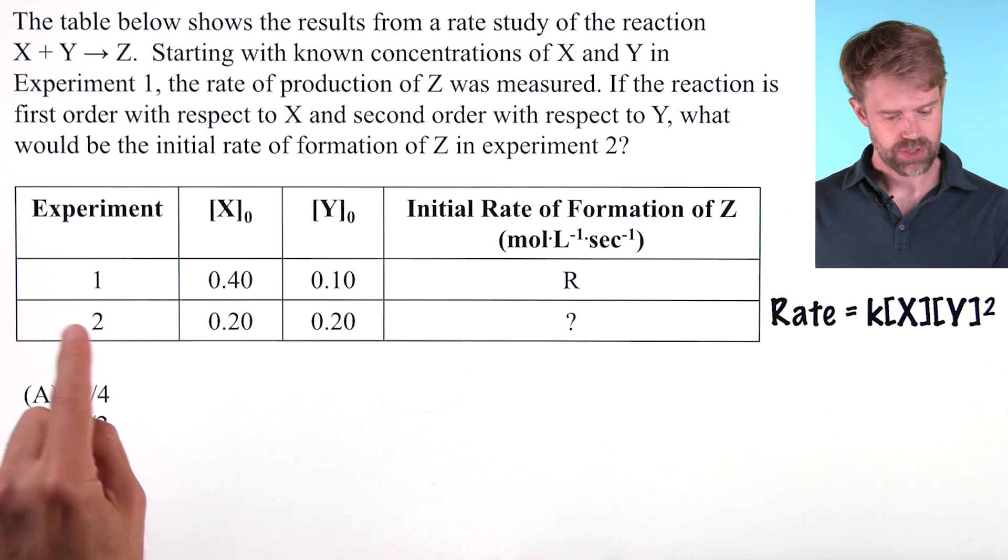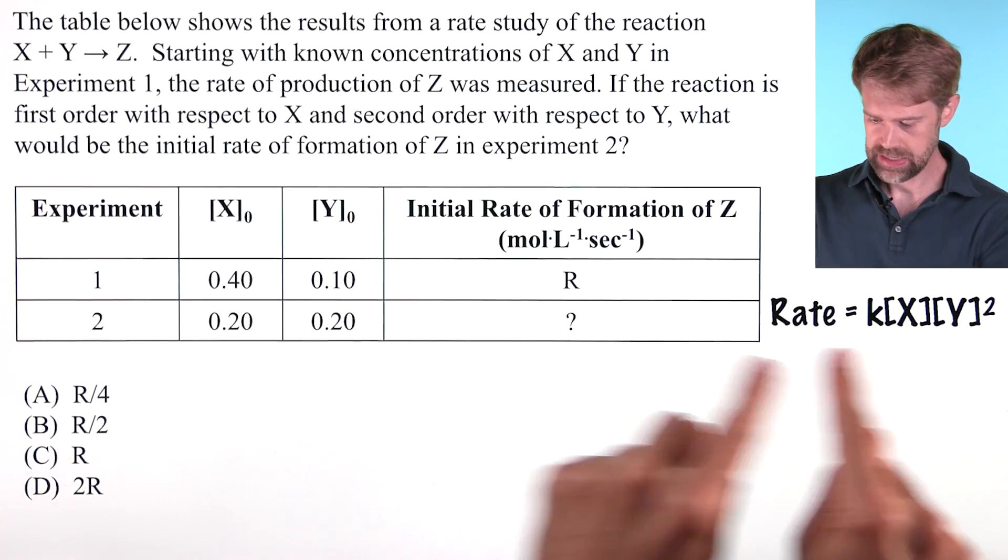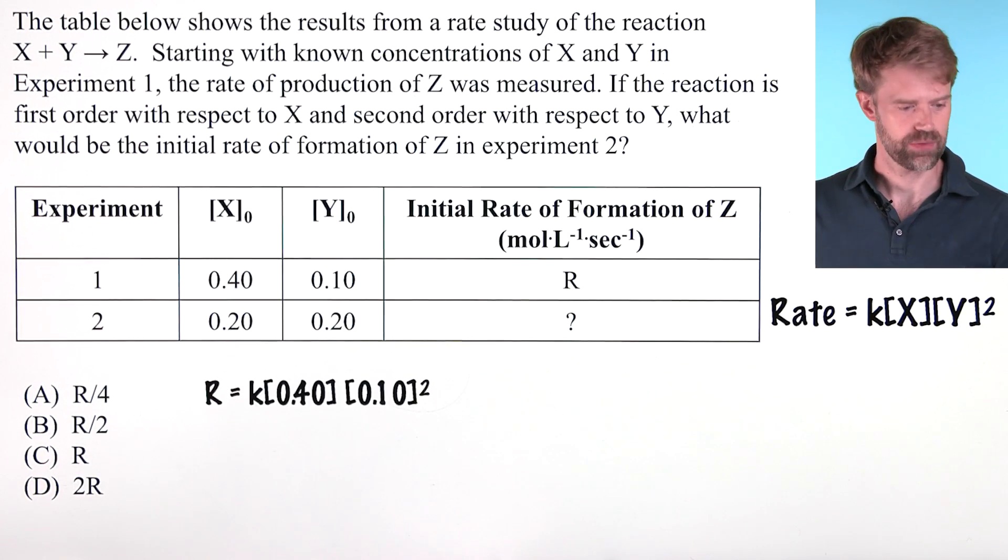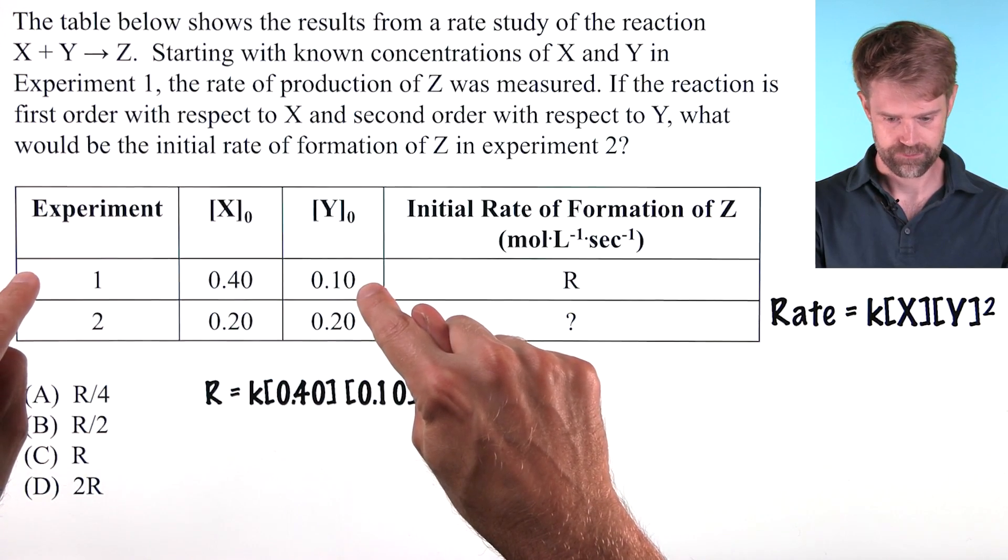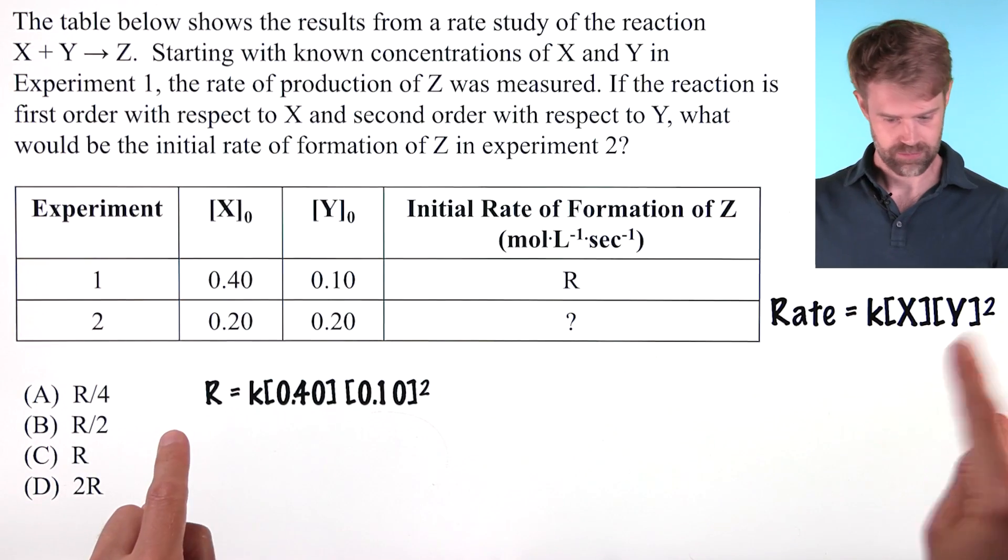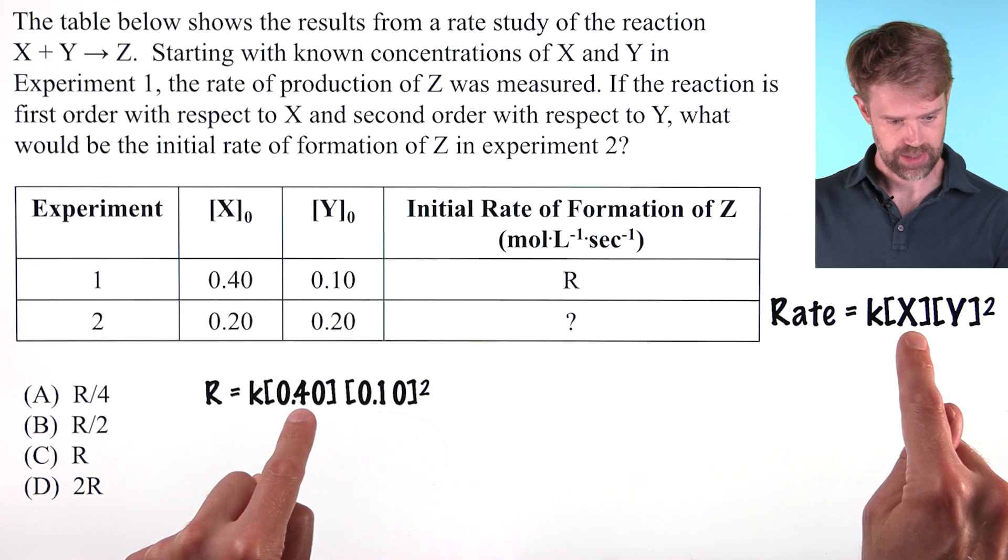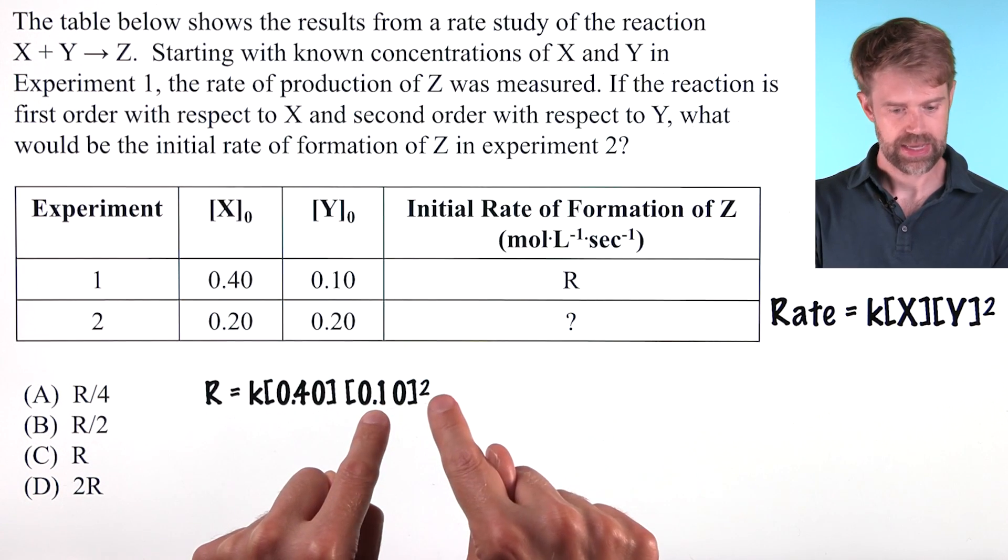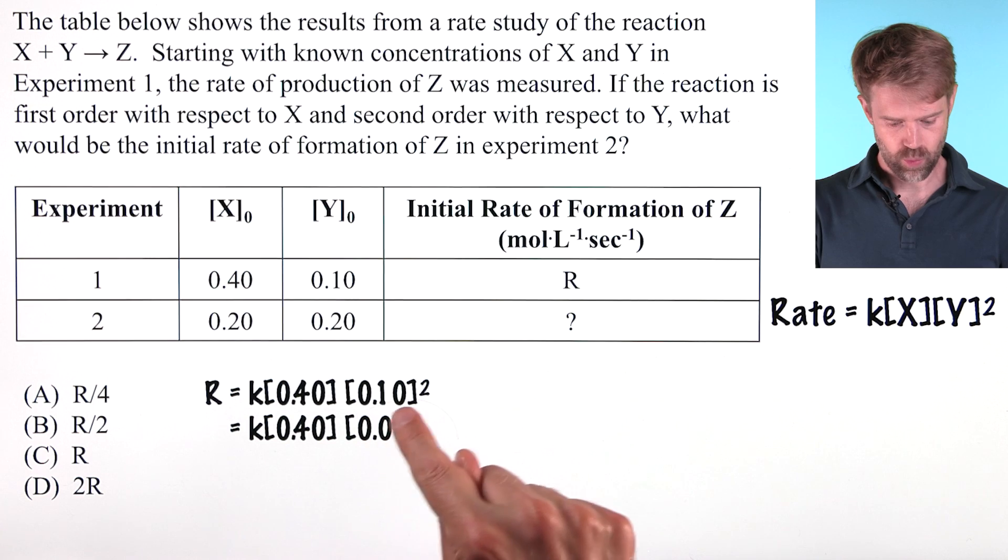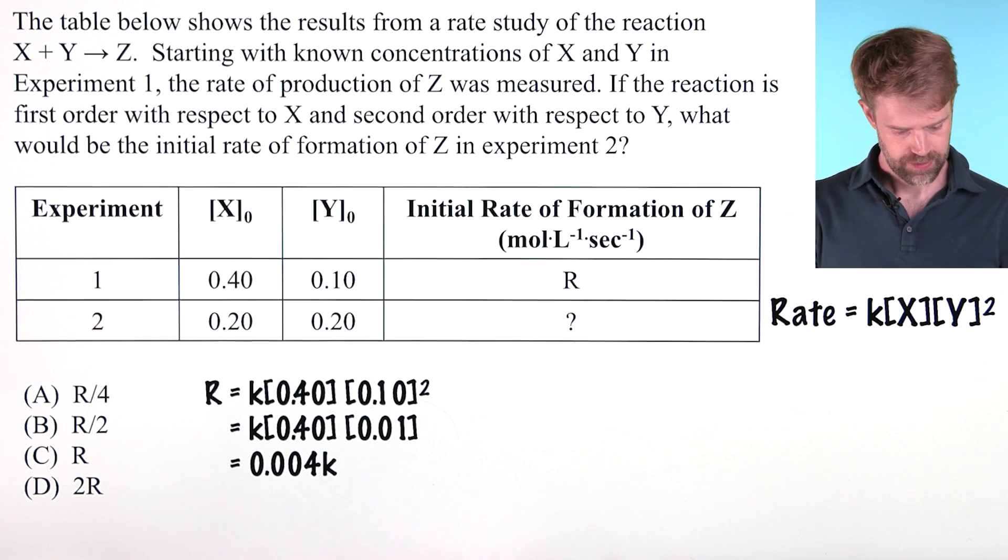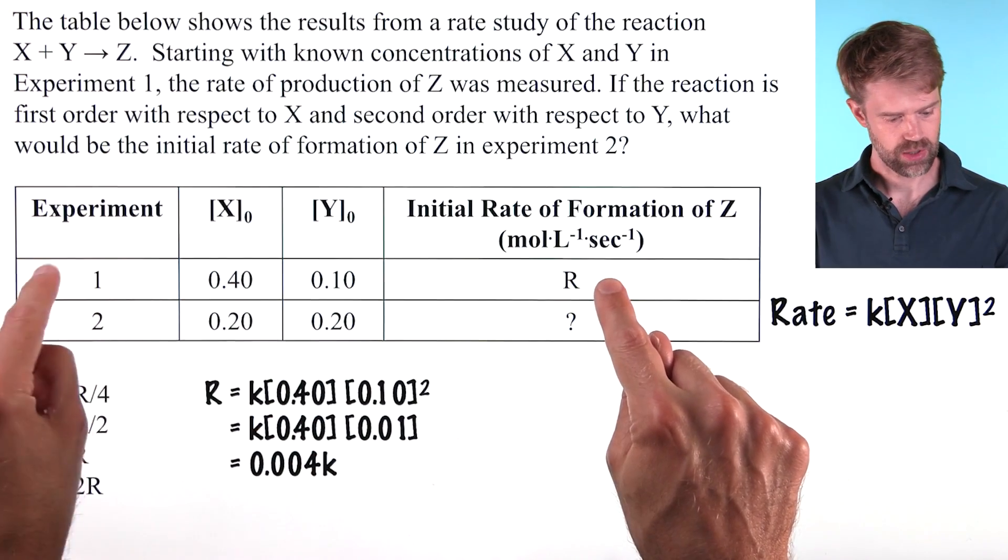So since these numbers are so simple, a really clear way to solve this is to just plug values into the rate equation, get some actual numbers, and compare them. We'll start out solving for R, which is the rate here for experiment 1. We're just going to plug these values into the rate equation. So R equals K times X times Y squared because the reaction is second order with respect to Y. 0.1 squared is 0.01, do the math, and it gives us a final answer of 0.004K. That's R for experiment 1.